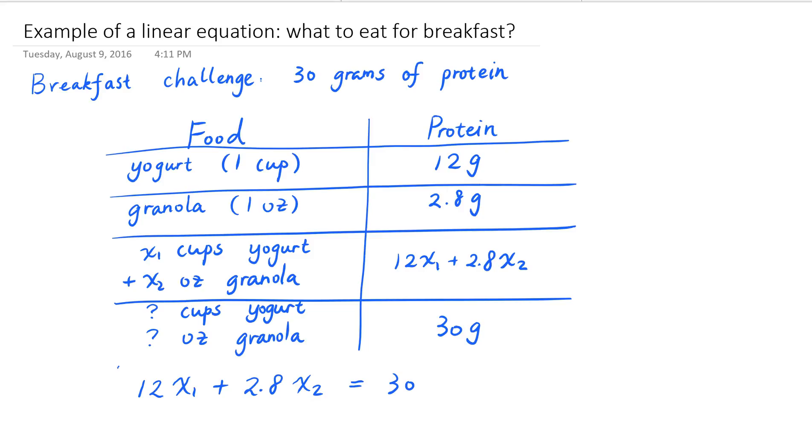To solve this problem, we arrived at this linear equation about the two unknown variables x sub 1 and x sub 2, where x sub 1 is the number of cups of yogurt and x sub 2 is the number of ounces of granola.